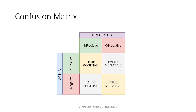This is how the confusion matrix looks. There is an actual section and a predicted section. The actual section will have 1 and 0 — you can call them true or false, positive or negative, or parameters of your null hypothesis. When both are 1, they match — that is true positive. When actual is 1 and predicted is 0, it is false negative. When actual is 0 and predicted is 1, it is false positive. When both are 0, it is true negative.